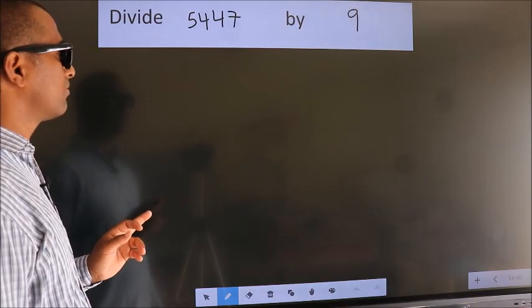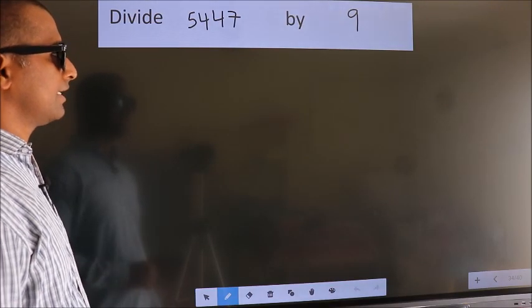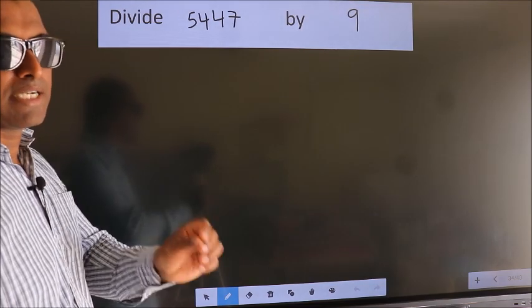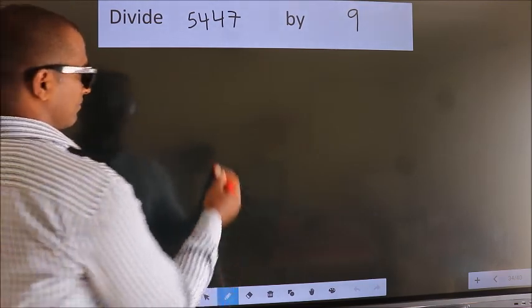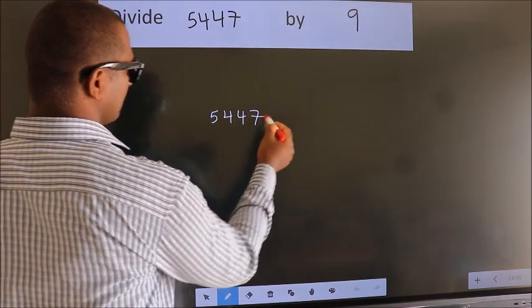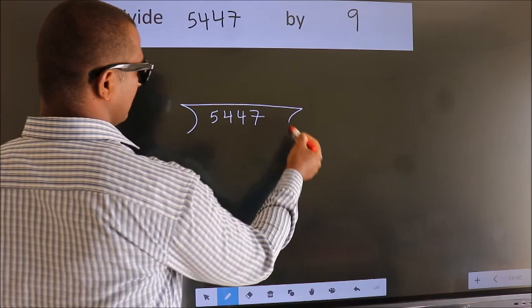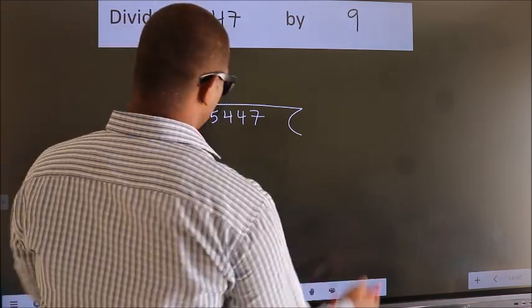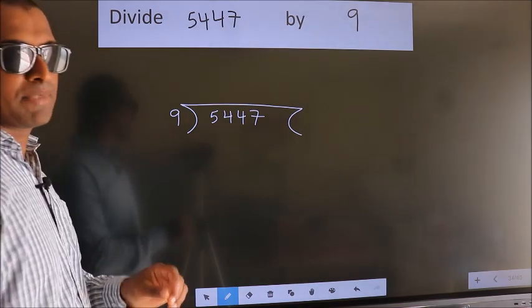Divide 5447 by 9. To do this division, we should frame it in this way: 5447 here, 9 here. This is your step 1.